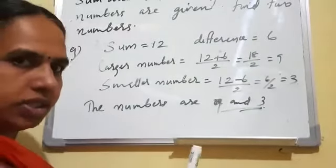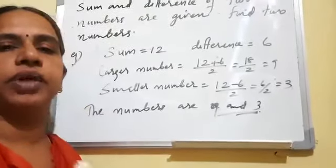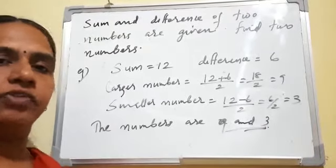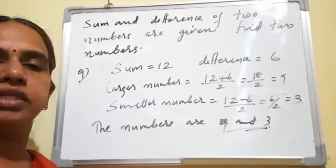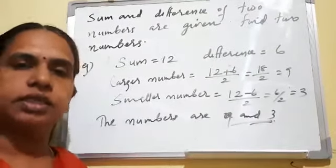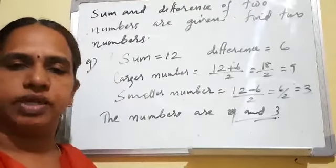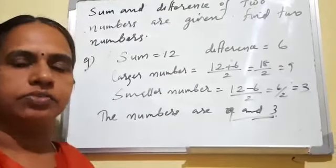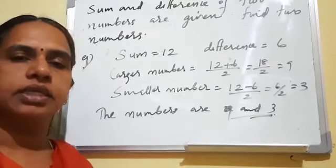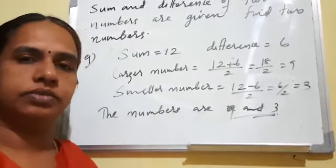The general formula: if x and y are the two numbers, the larger number equals (x plus y) plus (x minus y), divided by 2. The smaller number equals (x plus y) minus (x minus y), divided by 2.